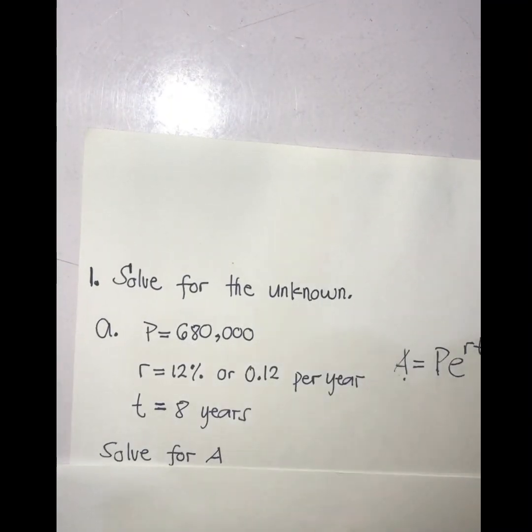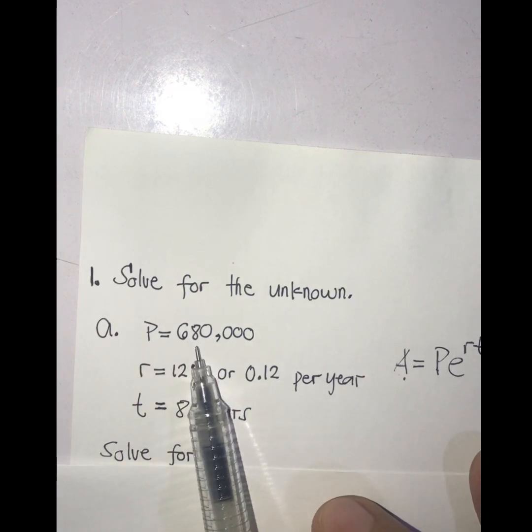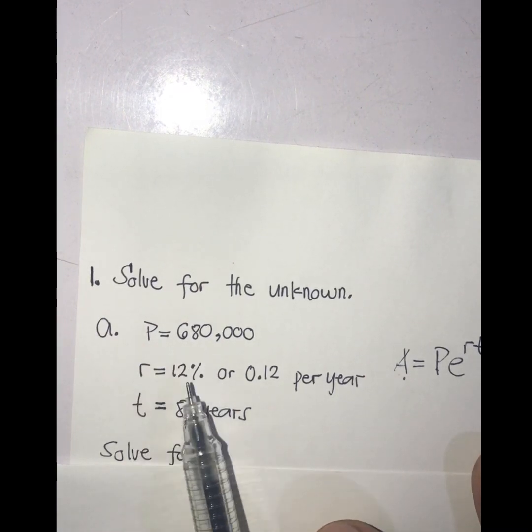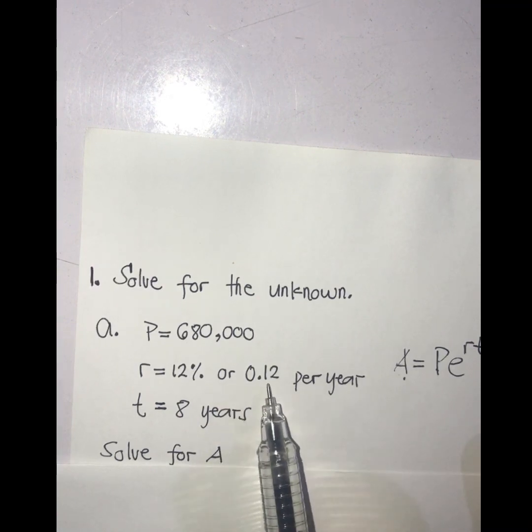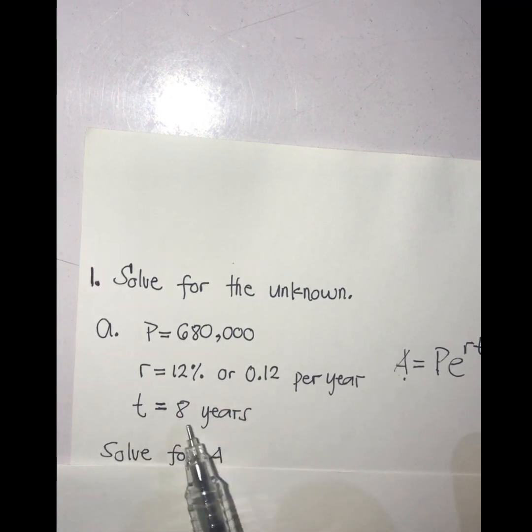We have here P equals 680,000, R equals 12% per year or 0.12, and T equals 8 years.